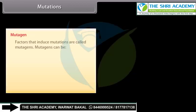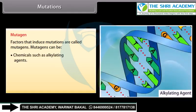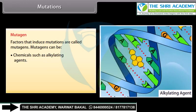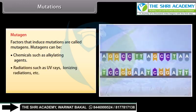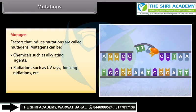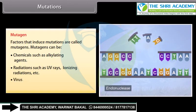Mutagen: Factors that induce mutations are called mutagens. Mutagens can be chemicals such as alkylating agents, radiations such as UV rays, ionizing radiations, viruses, and physical agents.